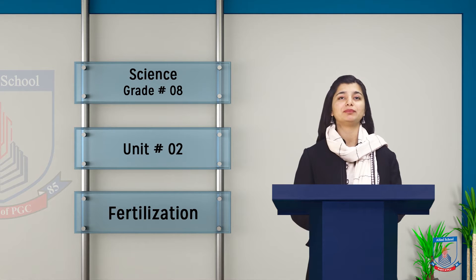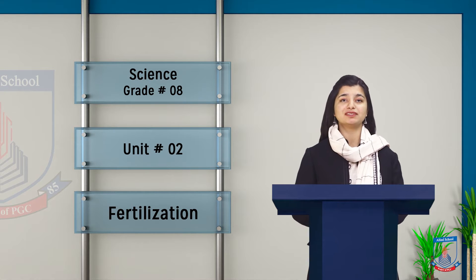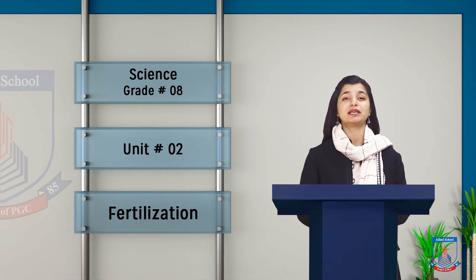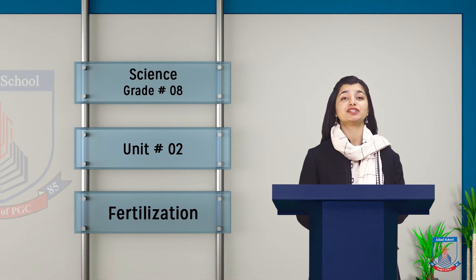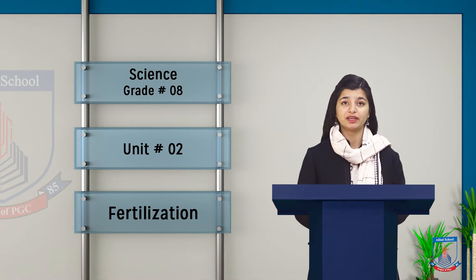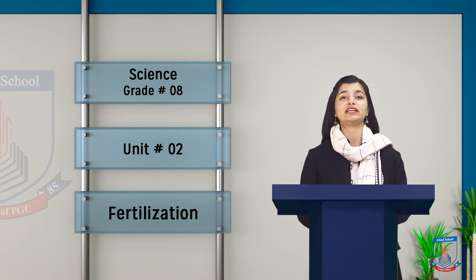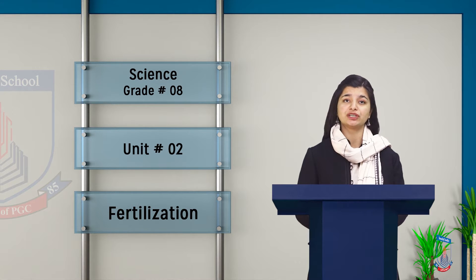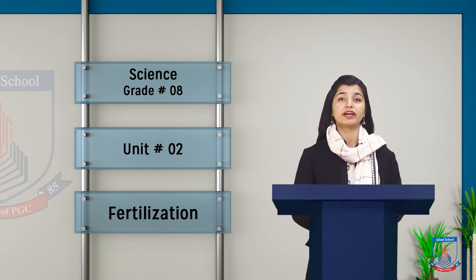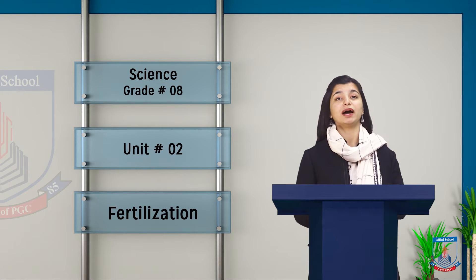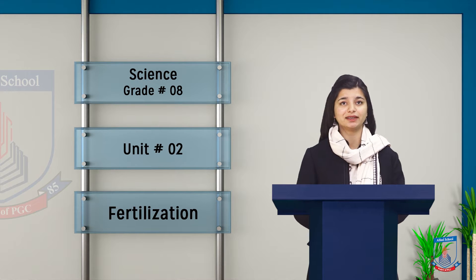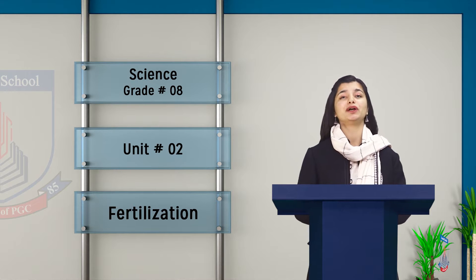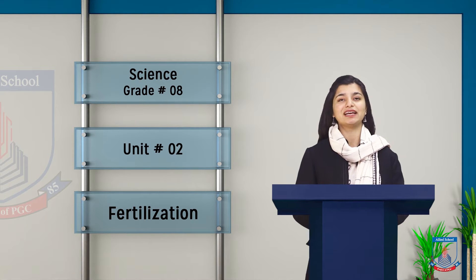In chapter 2 we have understood how reproduction works in plants. After that we talked about pollination, then we talked about wind pollination. Today we will talk about the next step after pollination, which is fertilization. So let's go understand what fertilization is.